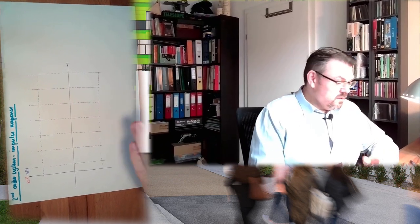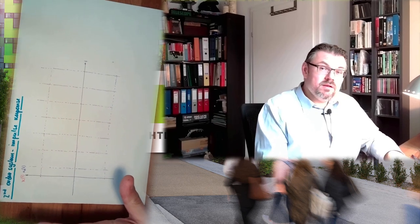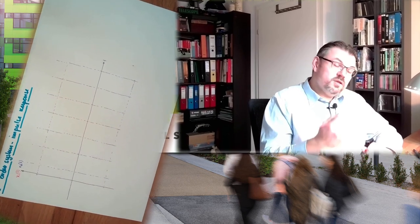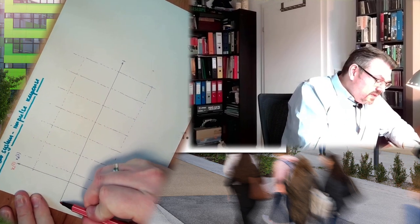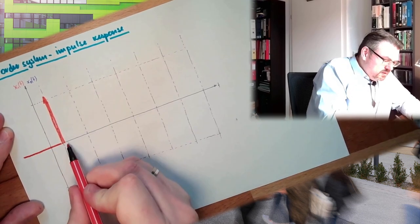So here, I have already prepared something. What is done is that at some point in time, the input is zero. And then at some point in time, we make a big impulse.